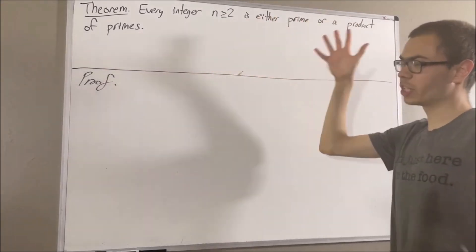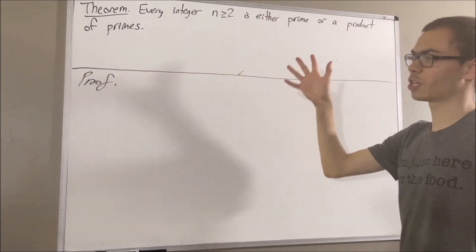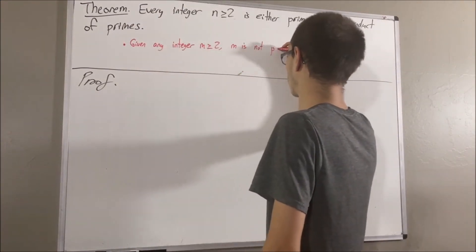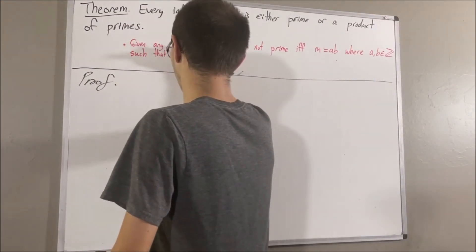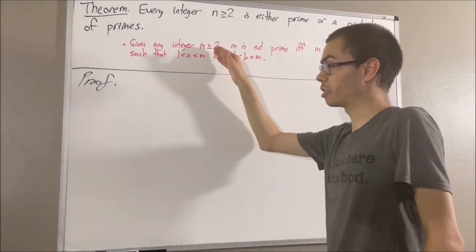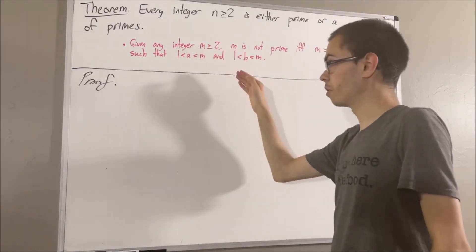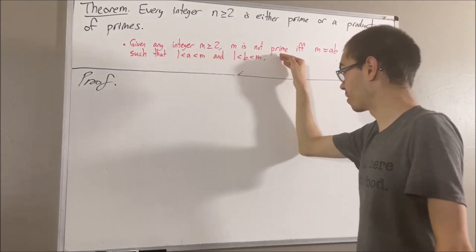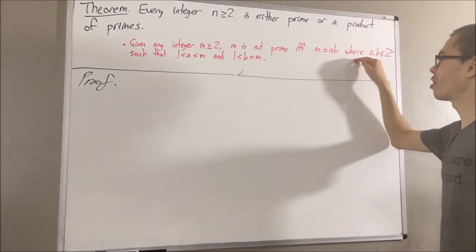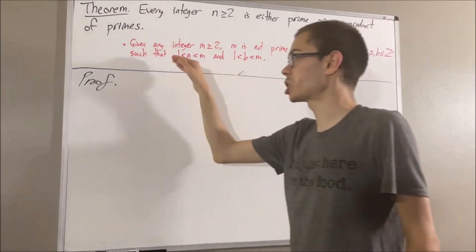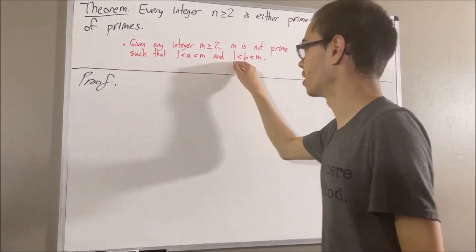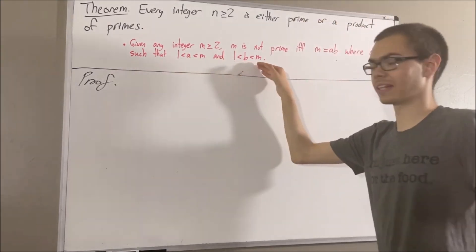In proving this theorem, we are going to use the following fact regarding prime numbers. Given any integer m greater than or equal to 2, we have that m is not prime if and only if m is equal to a times b, where a and b are integers such that 1 < a < m and 1 < b < m.